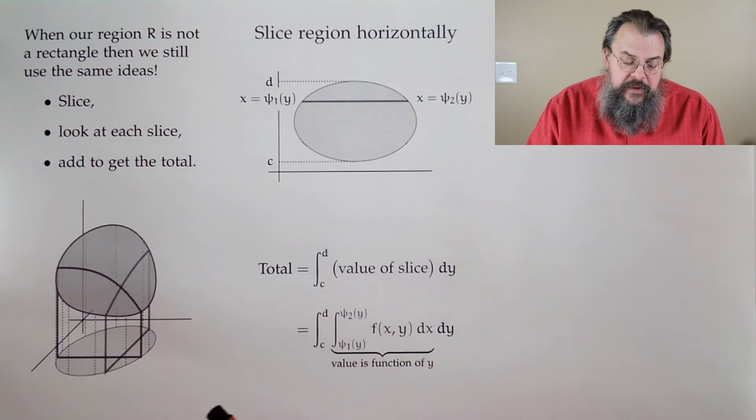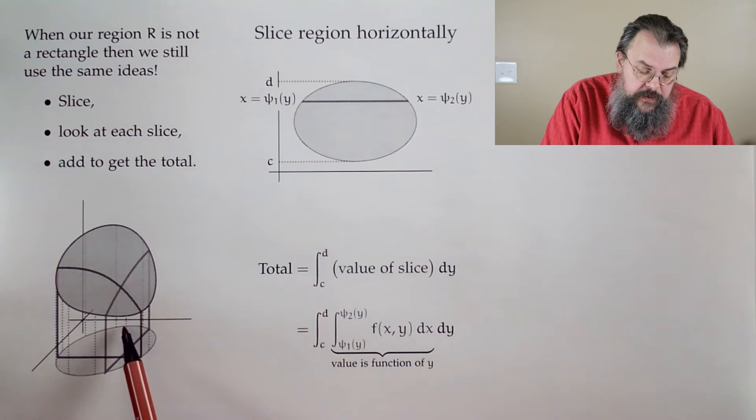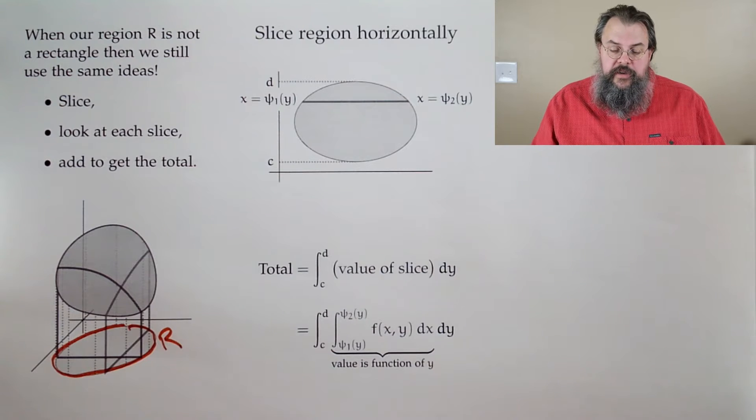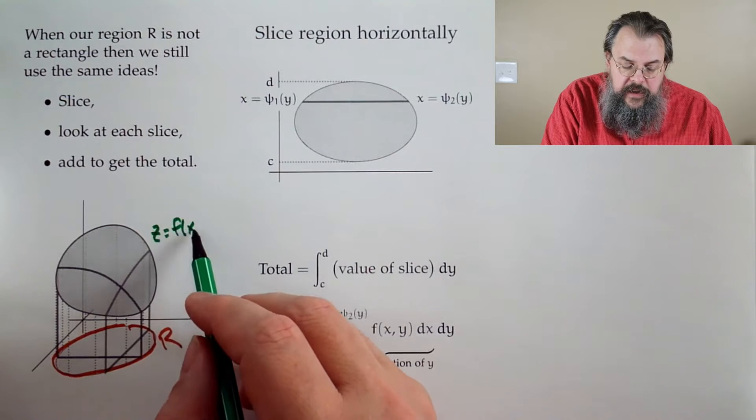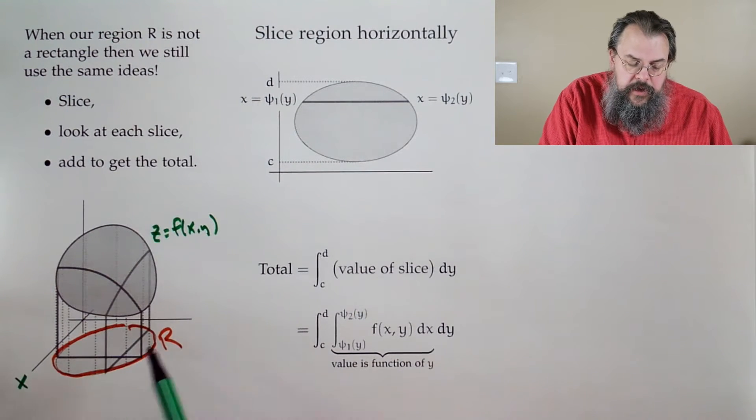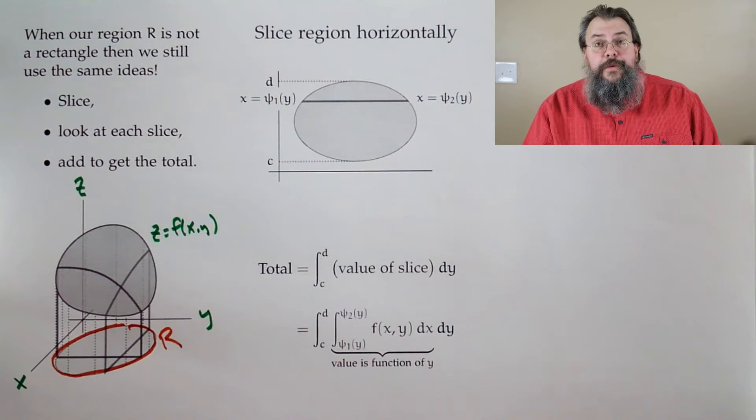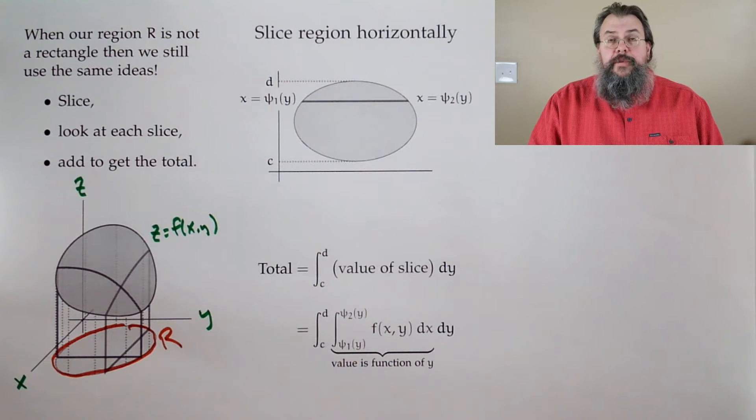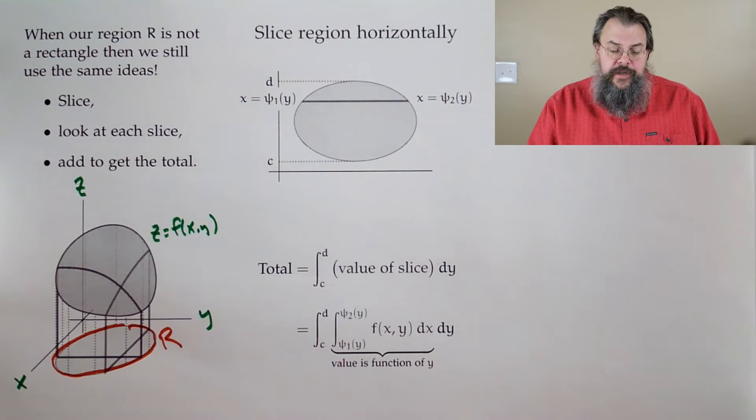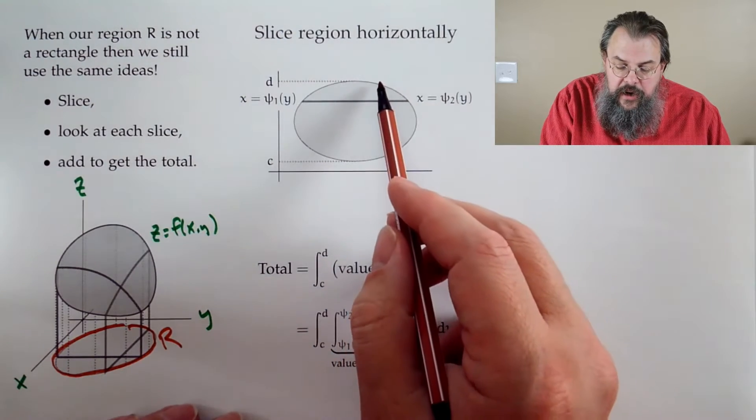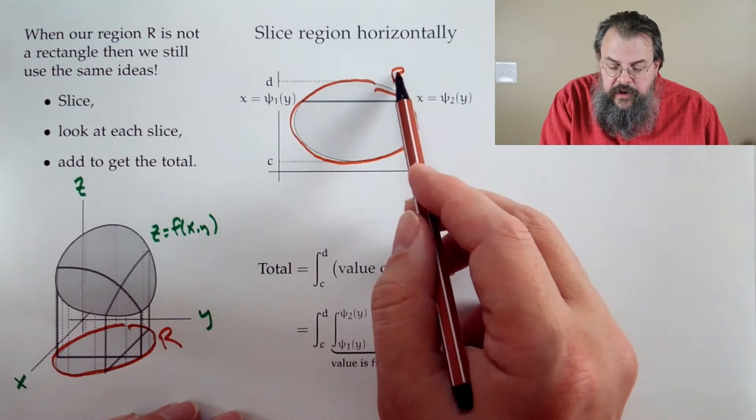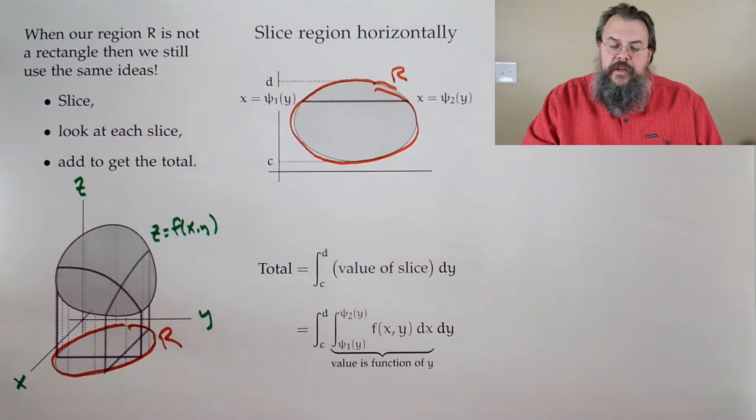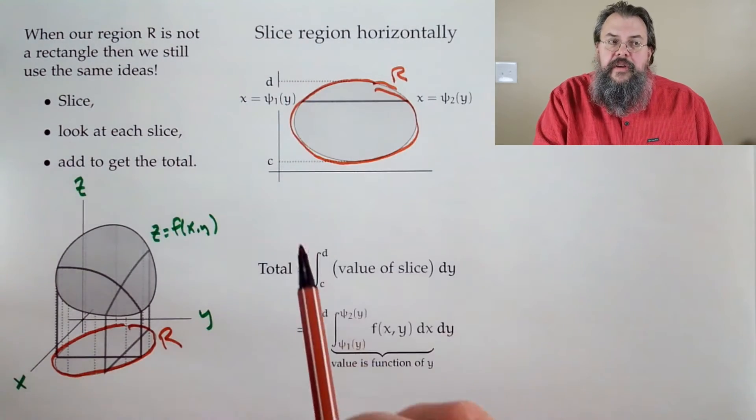So our basic setup says you have our region down here in the plane. So we're thinking of this is our region in the plane. So down here is R. And then you have a surface up above. And so we say, all right, so now we have the surface Z equals F of X, Y. And we can say, all right, we have our X, Y, Z space. What are we doing?